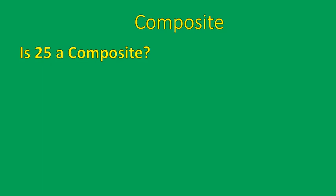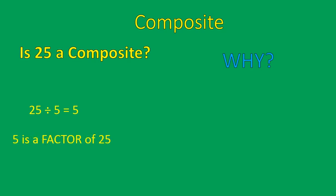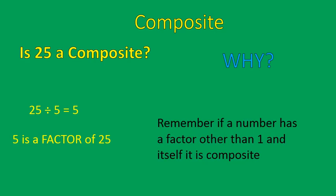So let me ask you this: is twenty-five a composite number? Think about that for a second and tell me why. Yes, it is a composite number. Why? Because twenty-five divided by five gives us a nice even number — five is a factor of twenty-five. If a number has a factor other than one and itself, then it is a composite number.